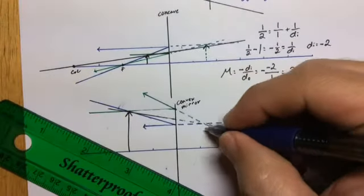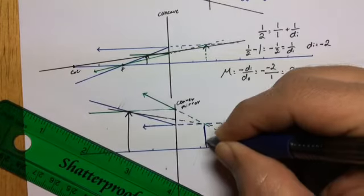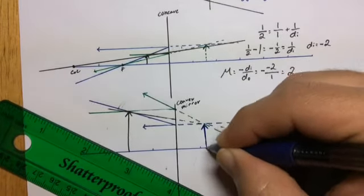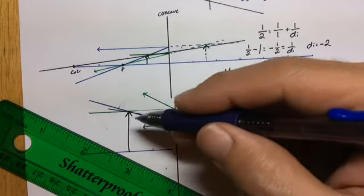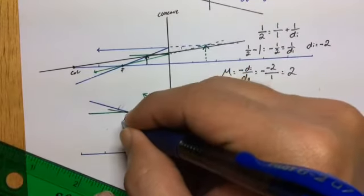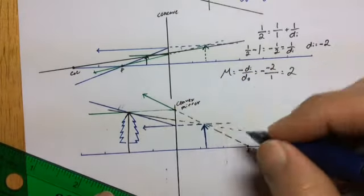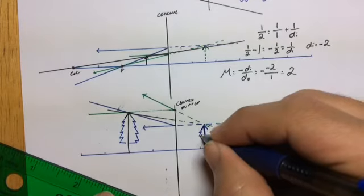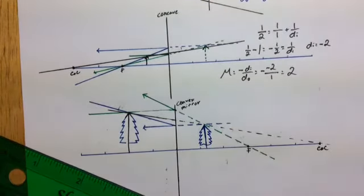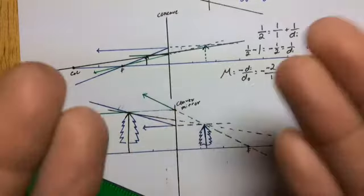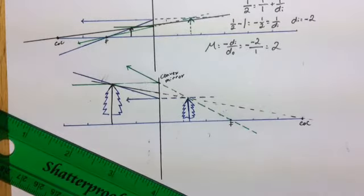The traced lines converge behind the mirror — that's where the image is. It's smaller than the object and on the other side of the mirror. This isn't me pointing at it; the arrow is the image. If the object was a tree, this would be a smaller tree. The image gets smaller — and now let's work the math.